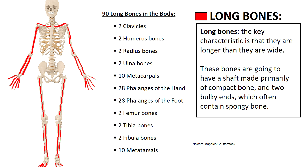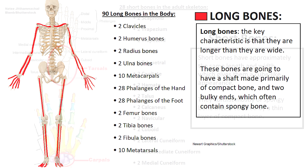The average adult skeleton has 206 bones, and there are going to be 90 long bones in the average adult skeleton, consisting mostly of bones from the upper and lower extremities such as the humerus, radius, the femur, and so forth, as well as the clavicle bones.